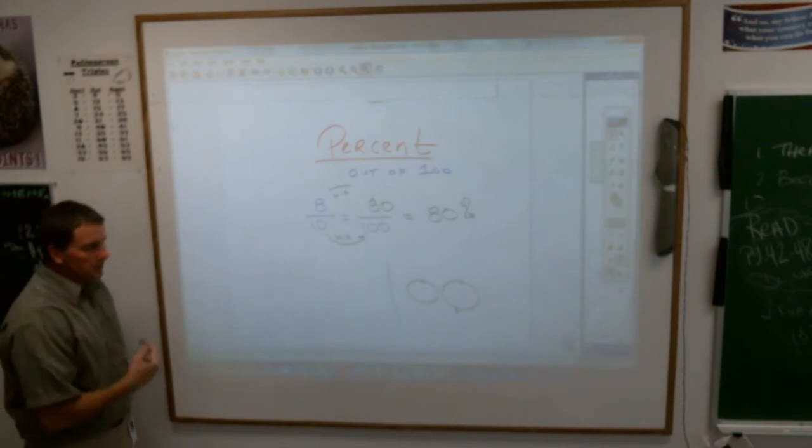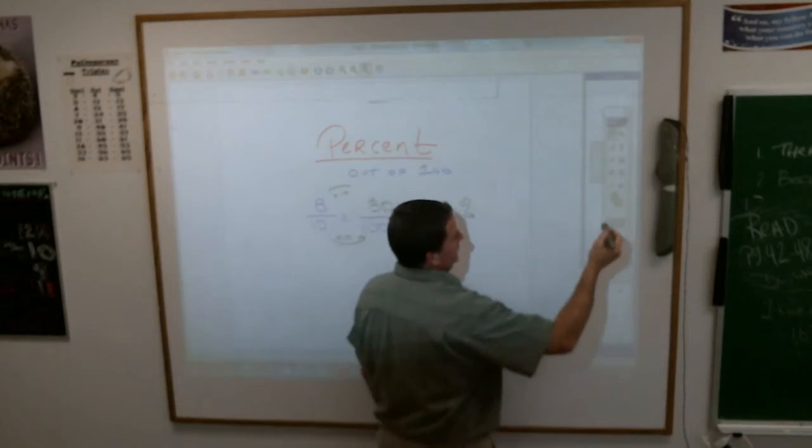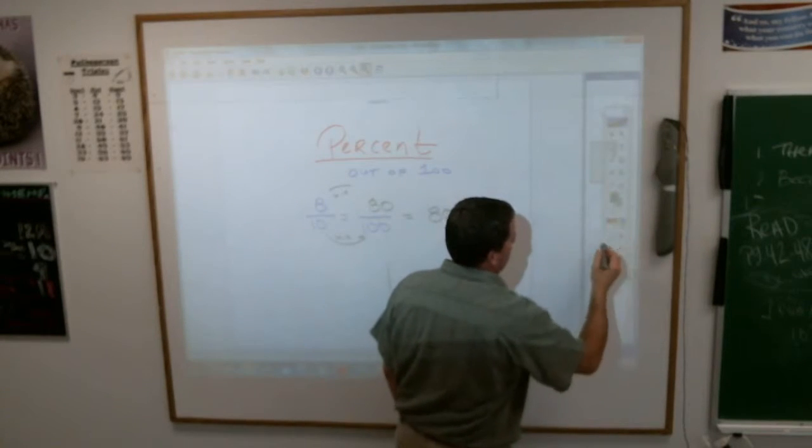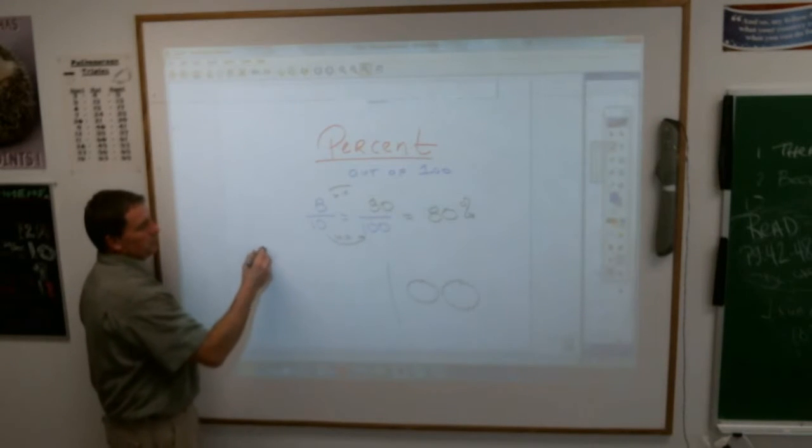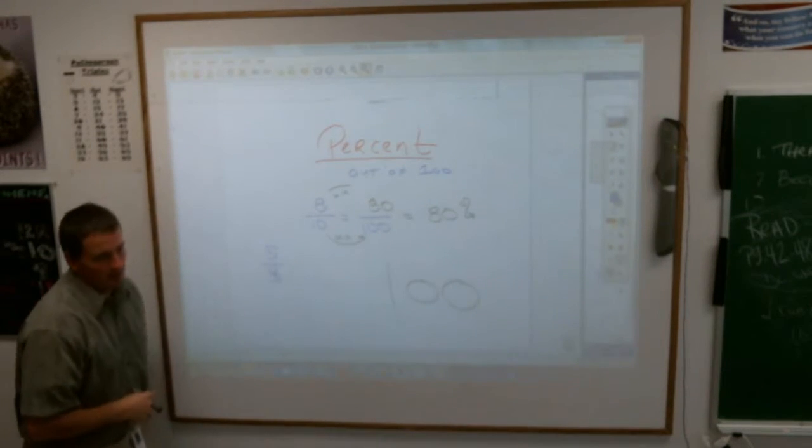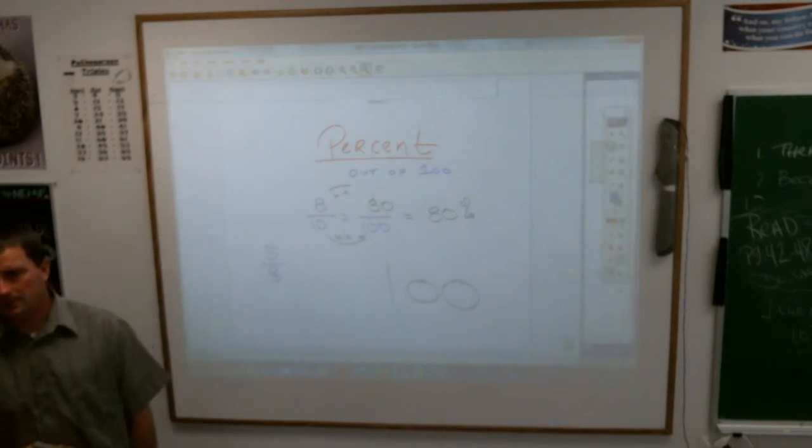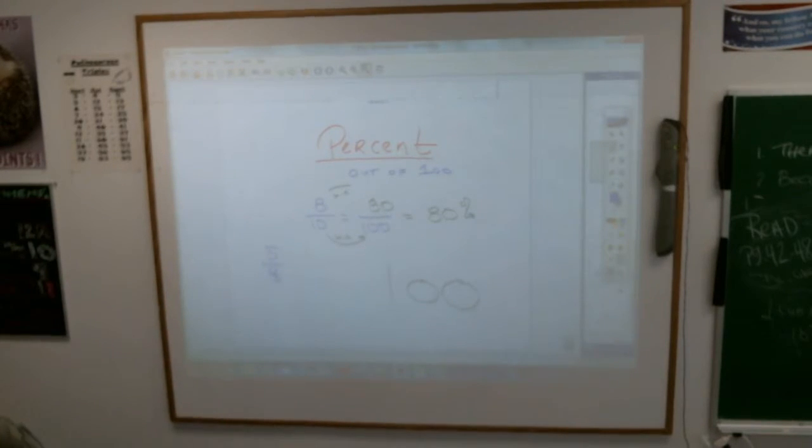Now what if it's something that doesn't go into 100? I know that's been on your mind lately. What if you made five out of six free throws? Or let's say five out of eight free throws. Andrew, you close that door? What percent would be five eighths?